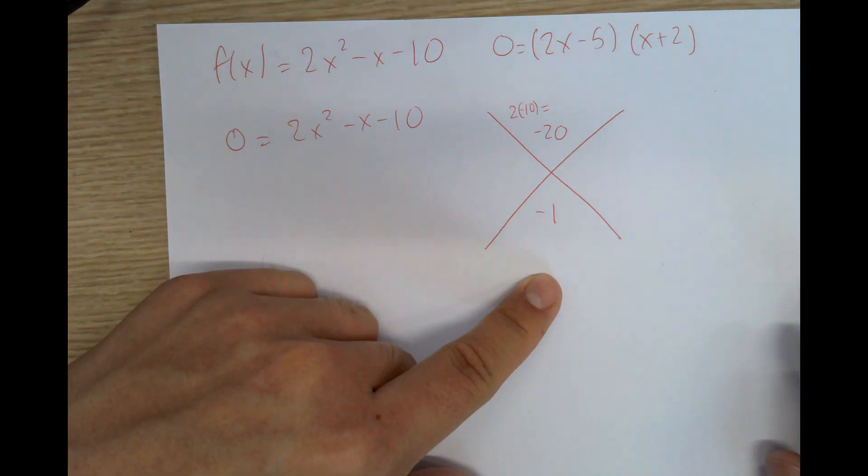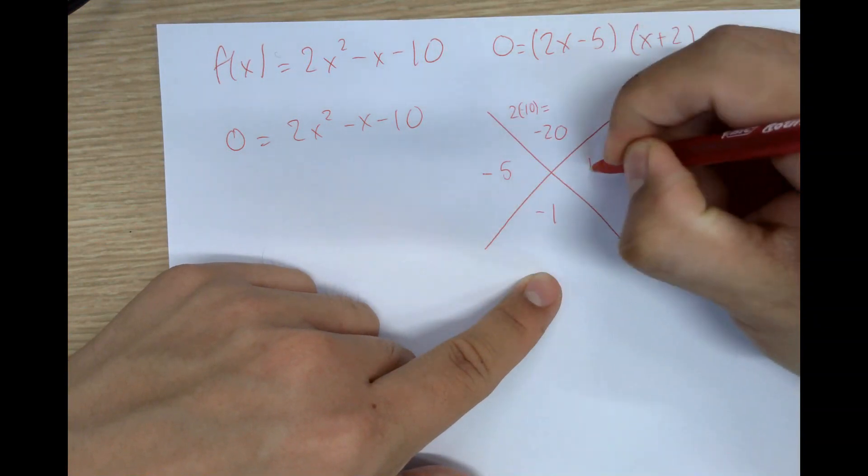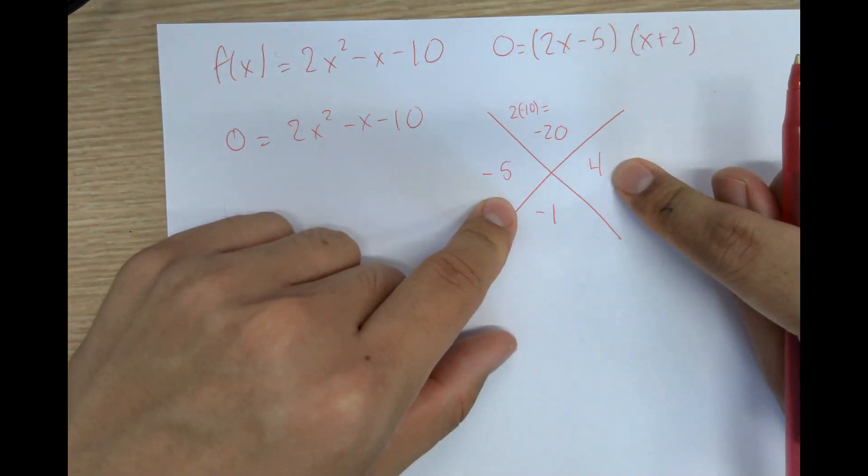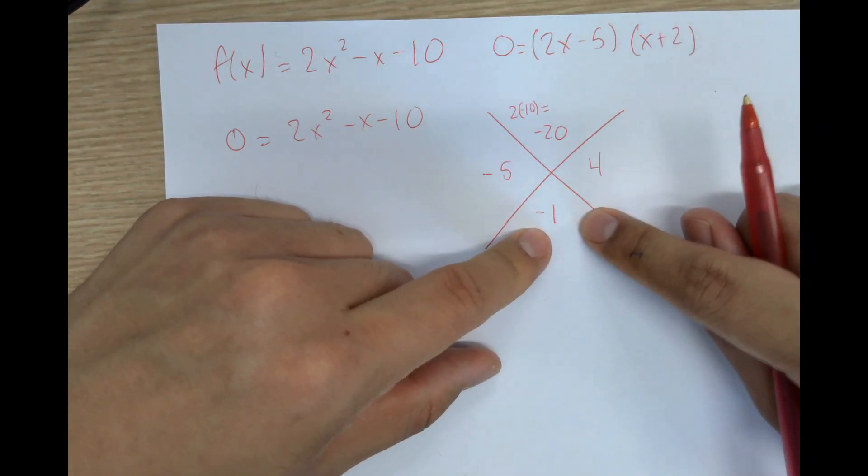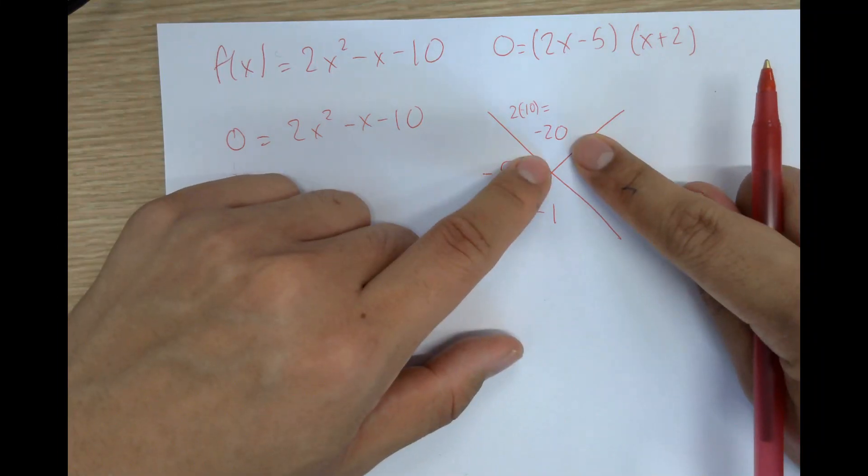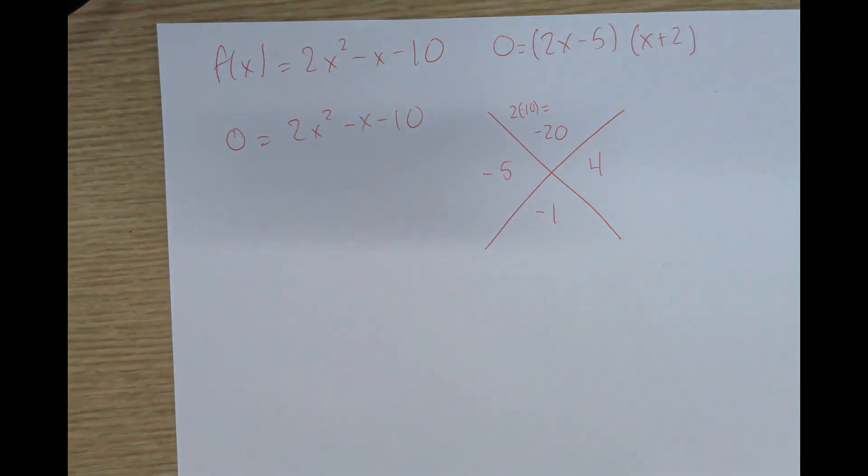So -5 and positive 4, let's check this out. When you add them together, they equal -1. When you multiply them, they equal -20. There you go. So that is the factors we're going to use.